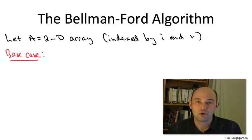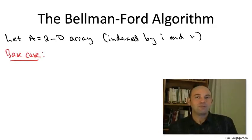So the base case is when I equals zero, and then we're talking about getting from S to some vertex V using zero edges. Okay, well if V happens to equal S, then you can do it with the empty path, and the length of the empty path is zero.